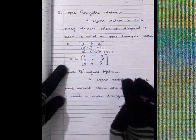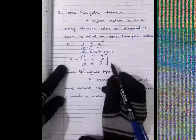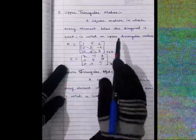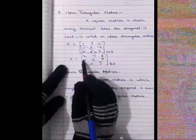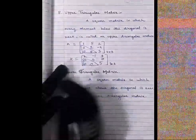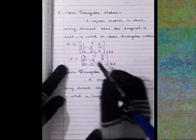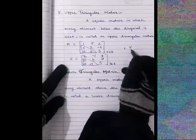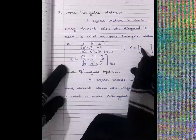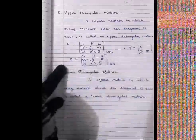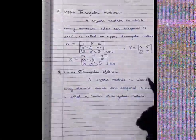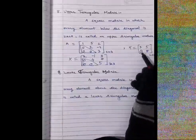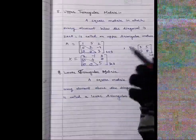A 2×2 example: diagonal elements 3 and 8, the one element below the diagonal is zero, and the element above the diagonal is 5. This is also an upper triangular matrix of order 2×2. The diagonal element is 3, 8 and the single below-diagonal element is zero.